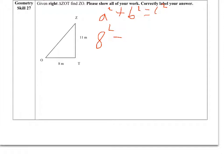B squared is length ZT, which is 11 squared. And the hypotenuse is ZO, which we still don't know, so that will be C squared.